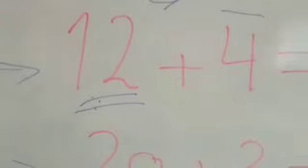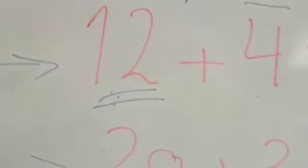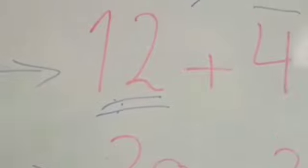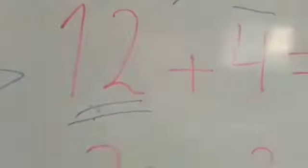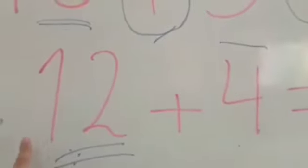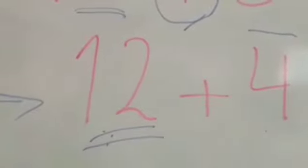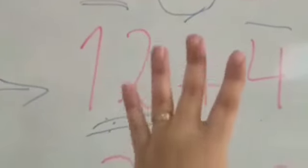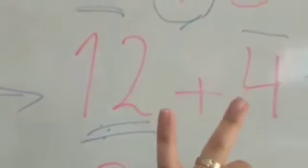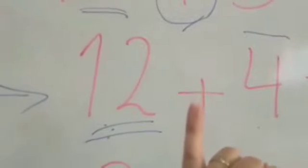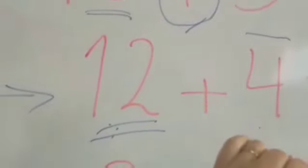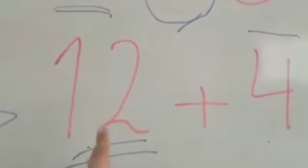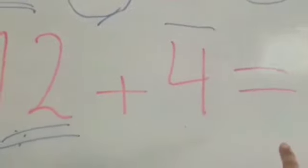And the smallest number, keep it in my mind. On my mind. Bravo. Excellent. So, 12 — count after 12: 13, 14, 15, 16. Excellent. So, 12 plus 4 equals 16. Excellent.